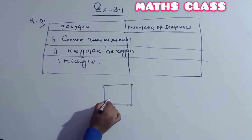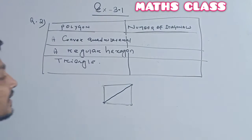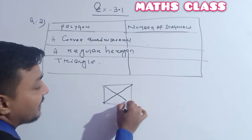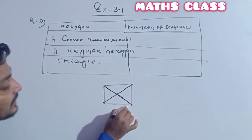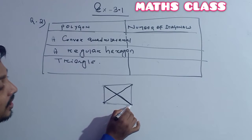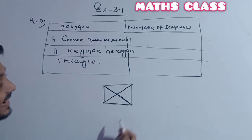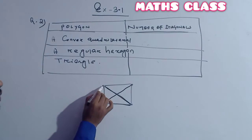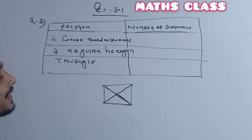The line segment joining the non-adjacent vertices is called our diagonal. Remember the definition: a diagonal is the line segment joining the non-adjacent vertices. And the line segment joining the adjacent vertices is called our side. Adjacent vertices joining line segment — it is called a side. Non-adjacent vertices joining line segment — it is called a diagonal.